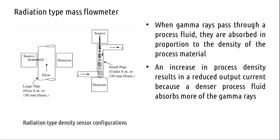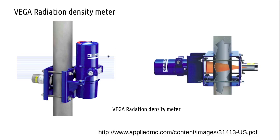There is also a configuration where the source and detector are placed at two right angles to each other, like a periscope. VEGA — a multinational company, not the helmet brand — makes radiation-type densitometers. In their product, the gamma isotope Cesium-137 is on one side and the detector is on the other side, with the process fluid pipe in between, producing an electrical signal output.